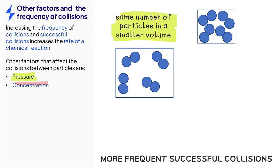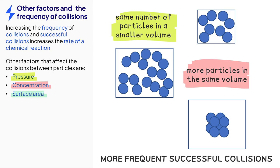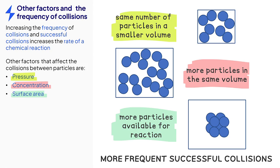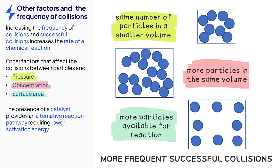The third factor is concentration. Increasing the concentration means that there are more particles in the same space, which again leads to more frequent successful collisions. The fourth factor that affects the rate of reaction is surface area. Increasing the surface area means that there are more particles available to react, which again leads to more frequent successful collisions. The final factor is the presence of a catalyst, which works by providing an alternative route for the reaction that has a lower activation energy.